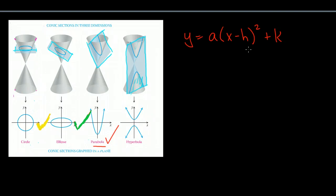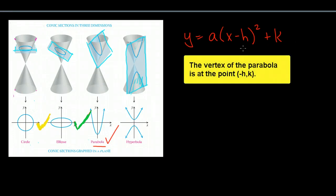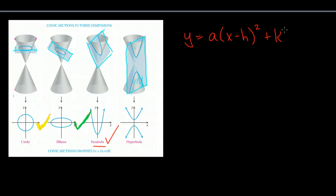And remember, h is a horizontal shifter, left-right shifter, while k is a vertical shifter. We go the opposite of h because it's inside those parentheses, but we'll go k because it's not inside the parentheses.